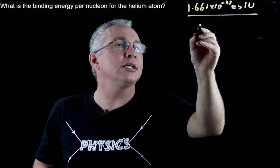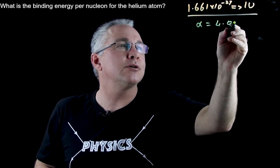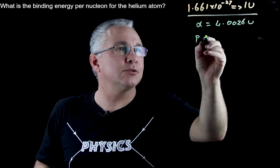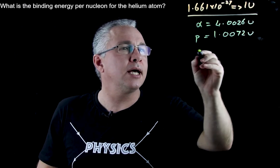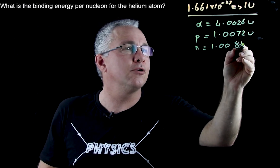If you were to look up the values, your alpha particle has a mass of 4.0026u. Our proton is equal to 1.0072u and our neutron is equal to 1.0084u.